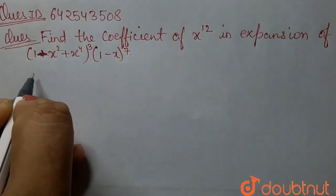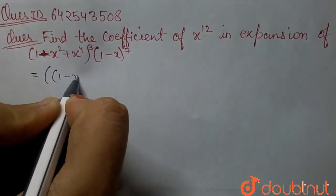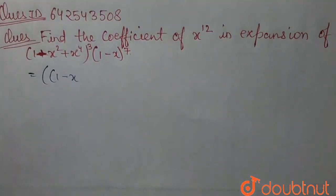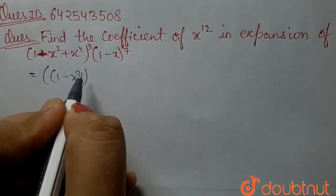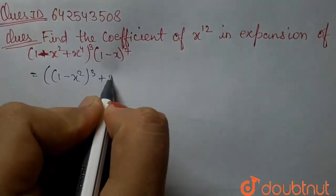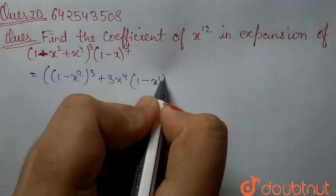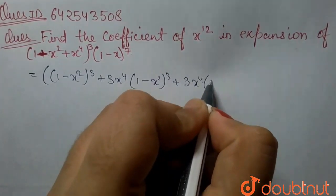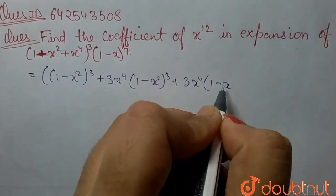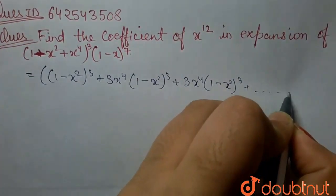So, we can write this expression as 1 minus x square to the power 3 plus 3 x to the power 4 times 1 minus x square to the power 3 plus 3 x to the power 4 times 1 minus x square to the power 3 and so on.